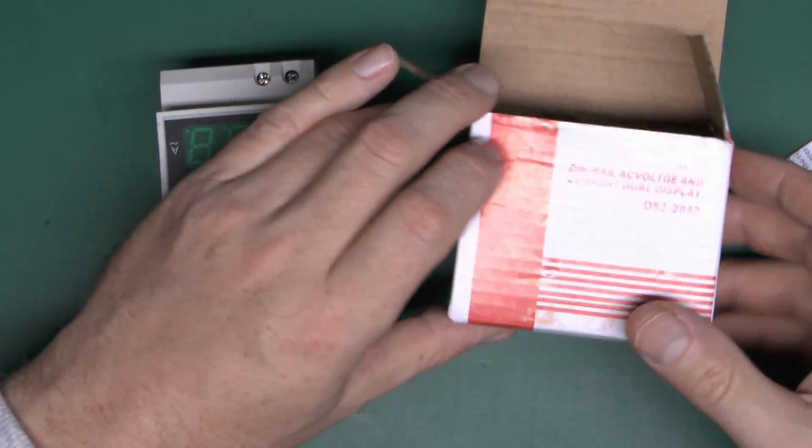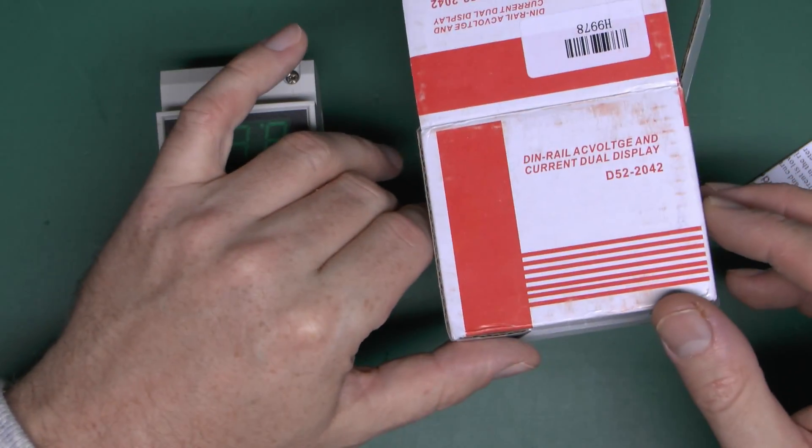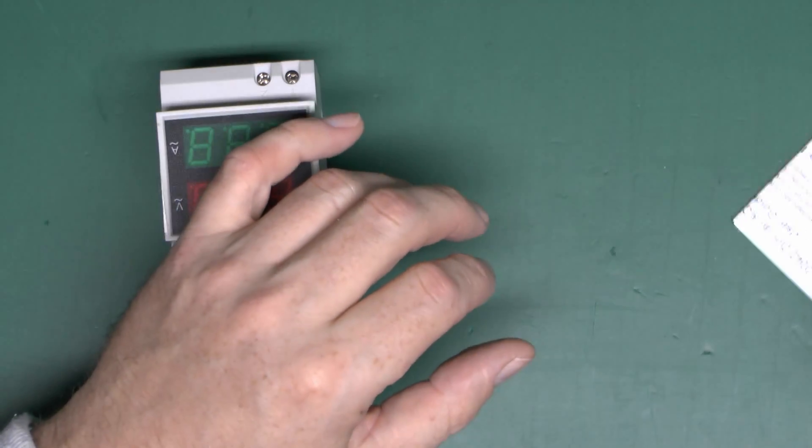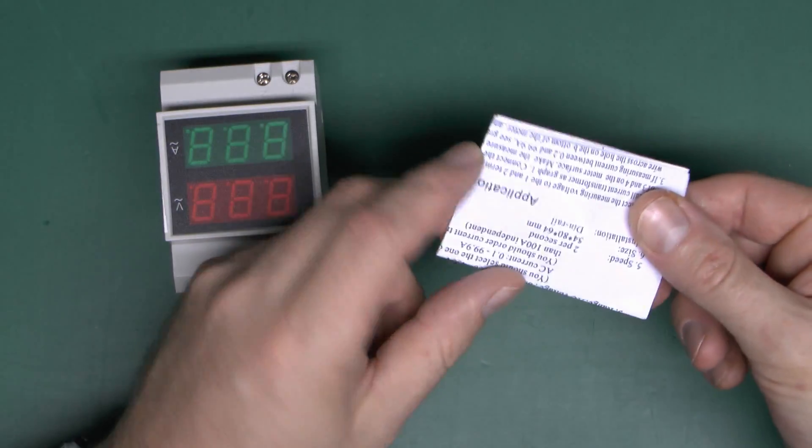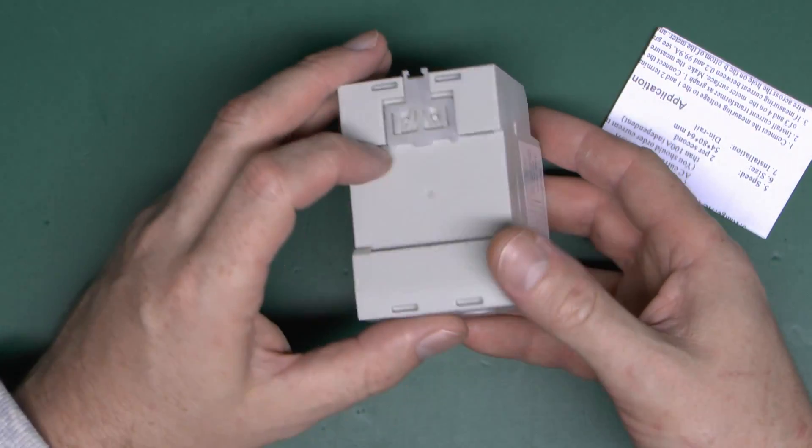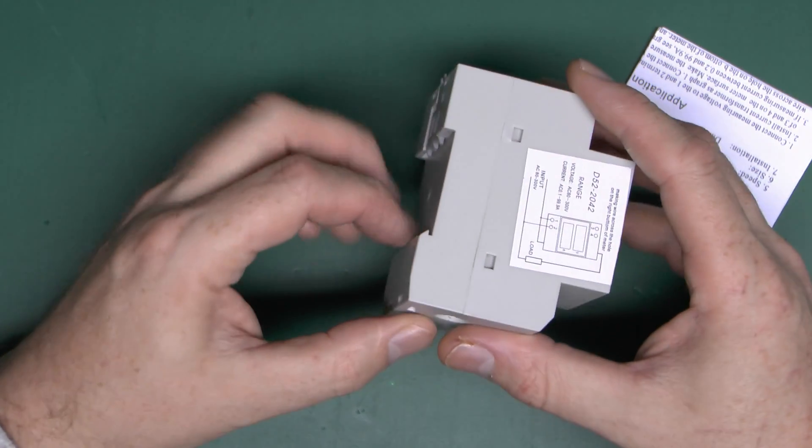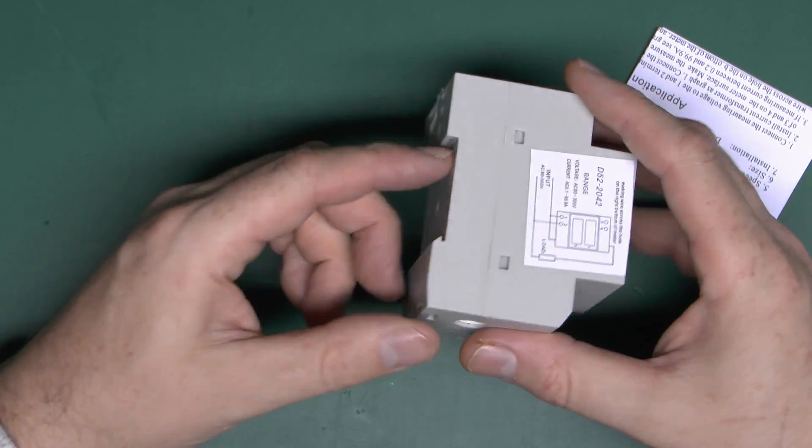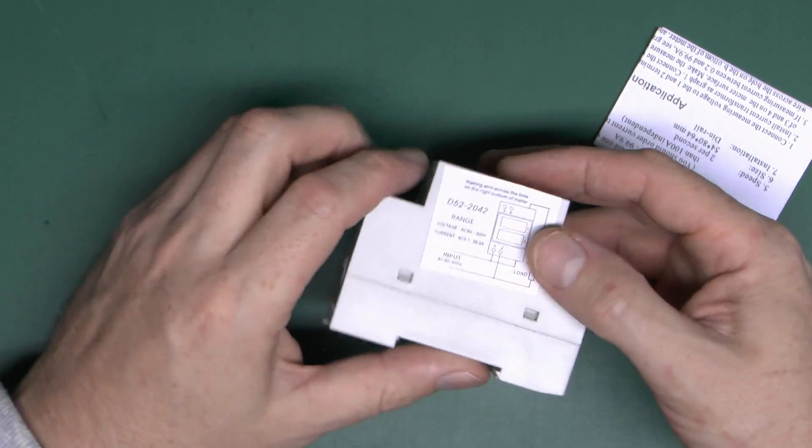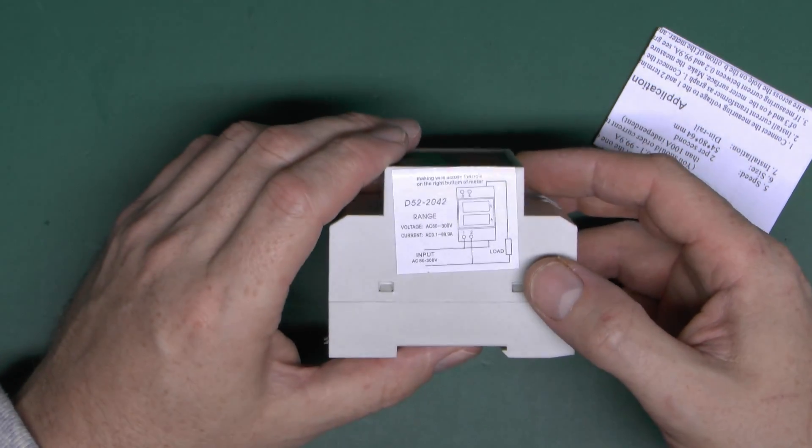So this is what we've got. It comes in this sort of plain box with just the description and code number on the front there. We also get a little instruction leaflet and the device itself. It's designed to clip onto a standard DIN rail type thing. It just hooks over there and the spring clip holds it on at the bottom.